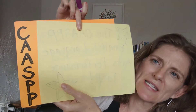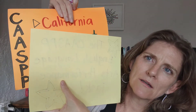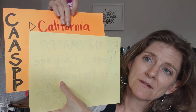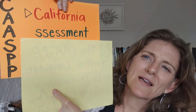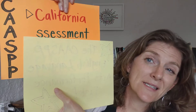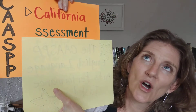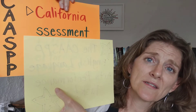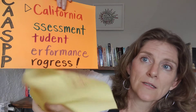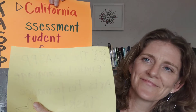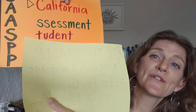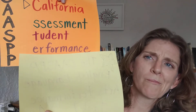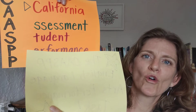CAASPP — what does it stand for? The CA stands for our beautiful state of California. The next A is for assessment — an exam, a test — assessing all the things that are going well with your reading and your writing, and assessing where there are any areas for improvement. The P is for performance: reading and writing.